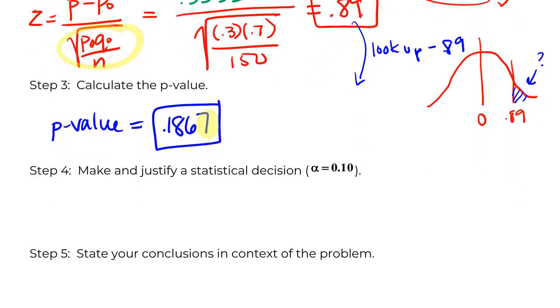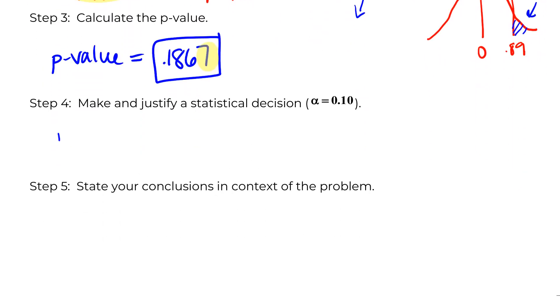So with this p-value, we're going to make and justify our statistical decision. So our p-value, as we discussed, is humongous because we had a not very unusual z-score. And we're comparing this to an alpha of 10%. Even at the most generous alpha, our p-value is greater, so we don't get to reject the null. We do not have evidence.